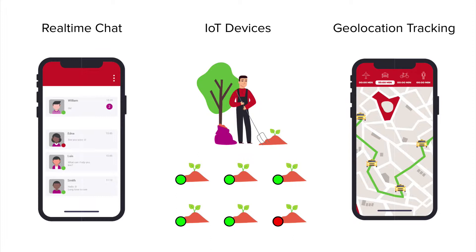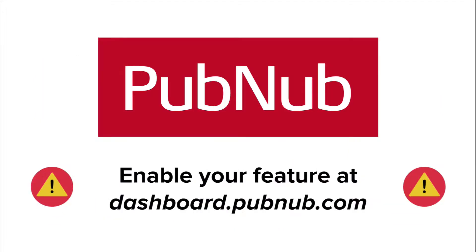This JavaScript tutorial will enable you to implement Presence functionality into your web browser or Node.js application. First, you must enable the Presence feature on your PubNum API keys. By default, Presence is disabled. Visit dashboard.pubnum.com to enable the feature for your application.